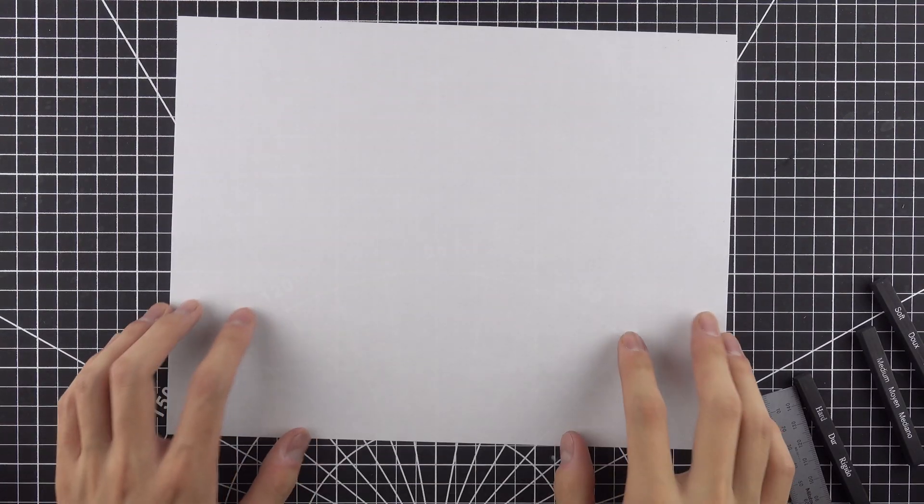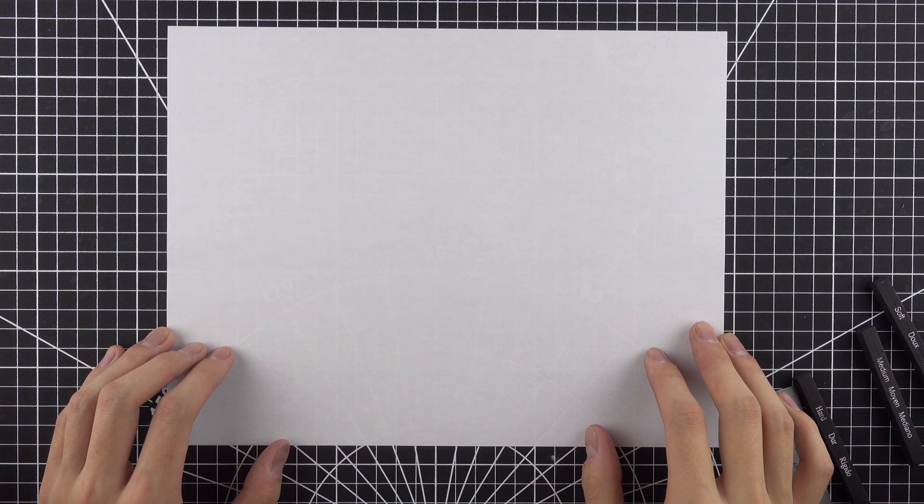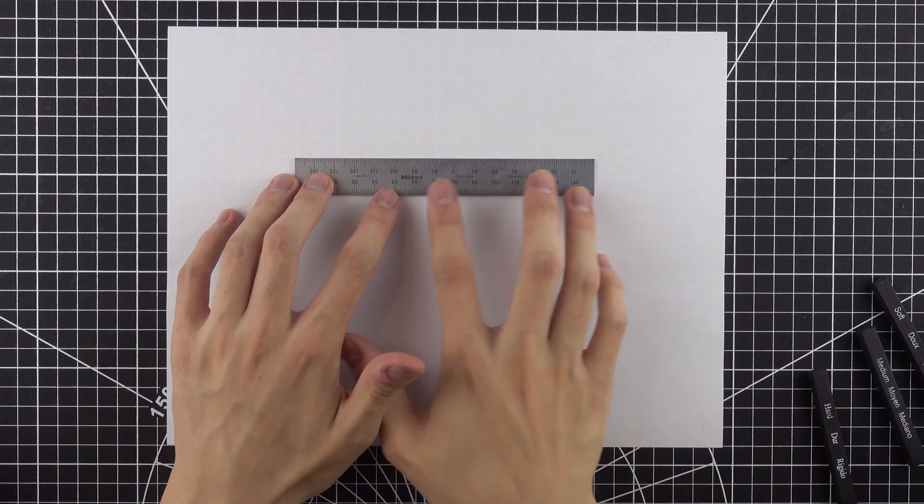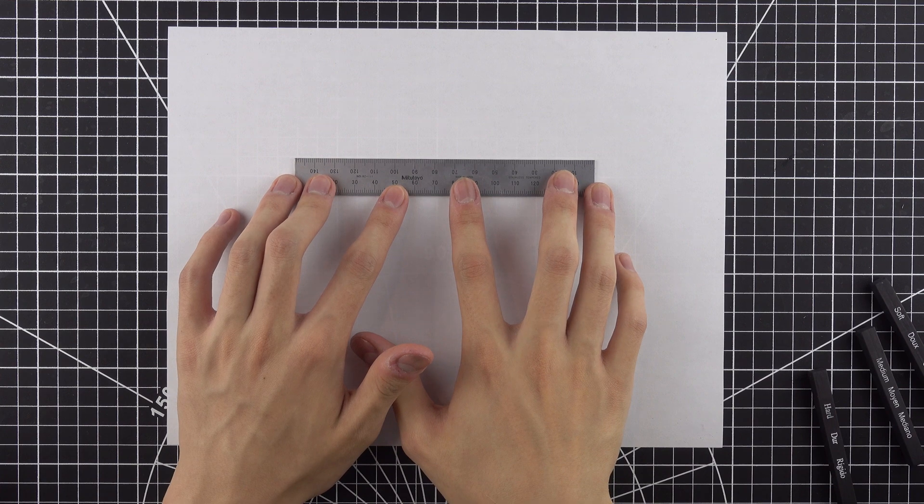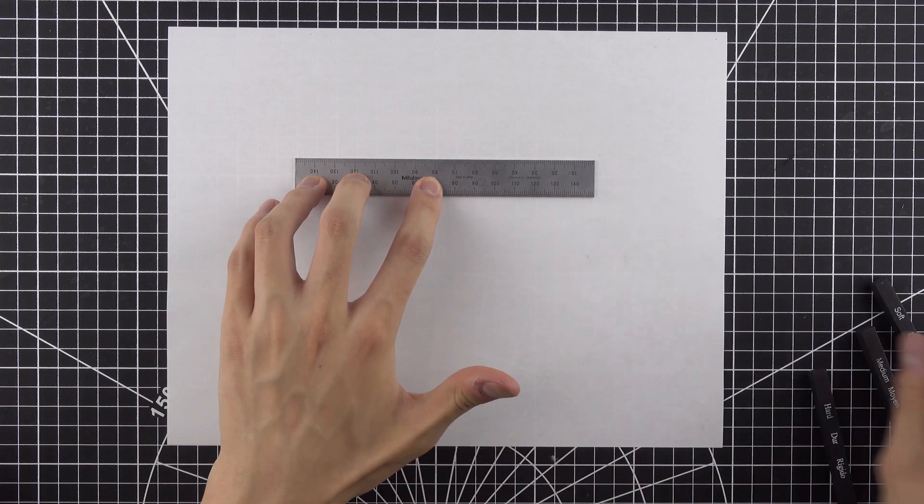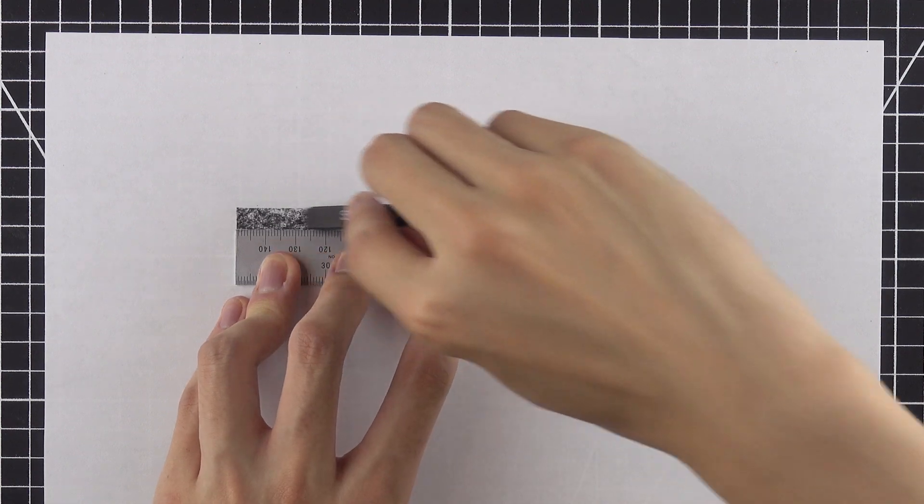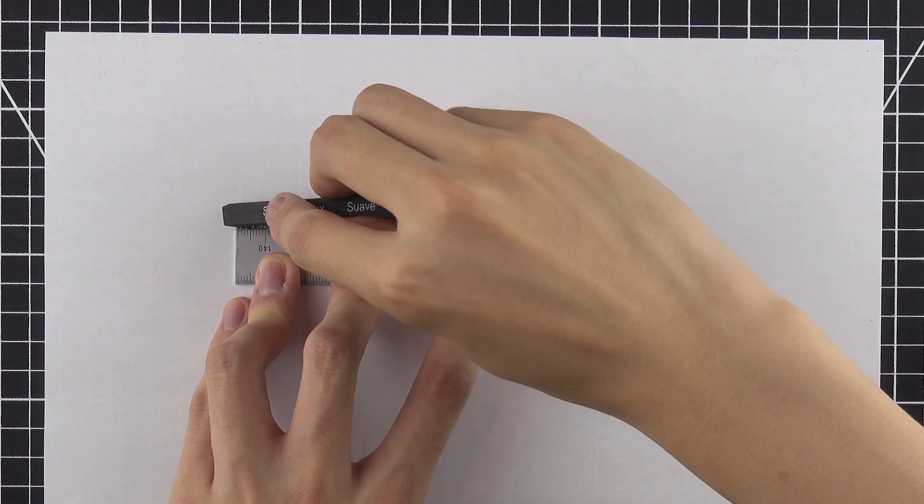Now we're ready to draw some lines. Here I used a ruler to guide the charcoal and drew lines using the soft, medium, and hard charcoal sticks. I repeated each line 10 times to get a dark and uniform line. Then I used the probes to check for their resistivity.